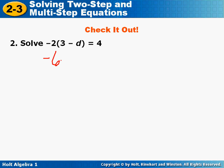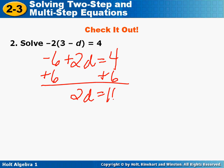Next check it out problem. Distribute. Be very careful and notice that when you distribute a negative to a negative, it gives you a positive. Solving two-step equations. And d is 5. Did you get it right? Good job.